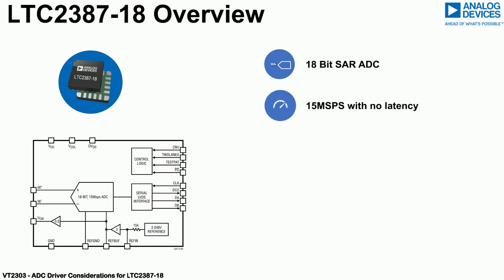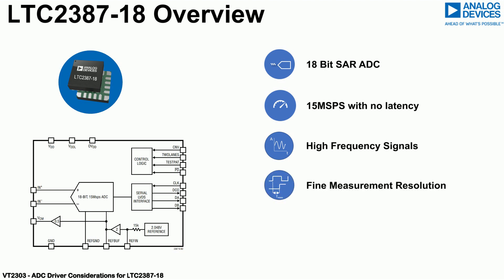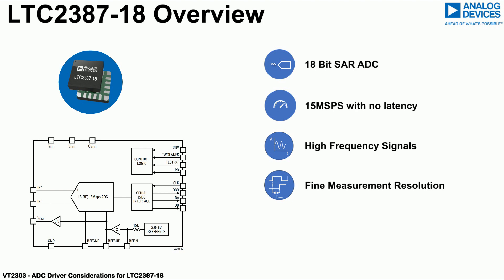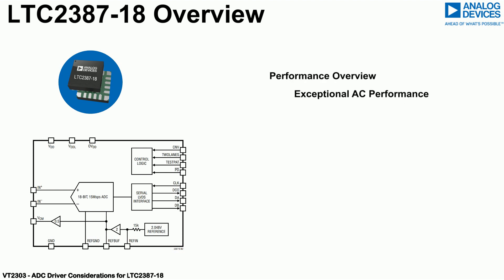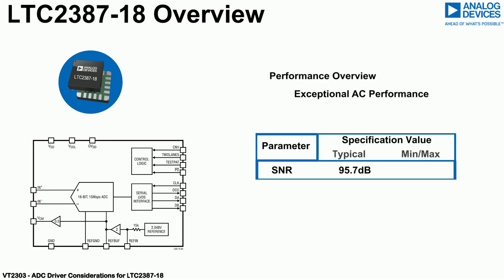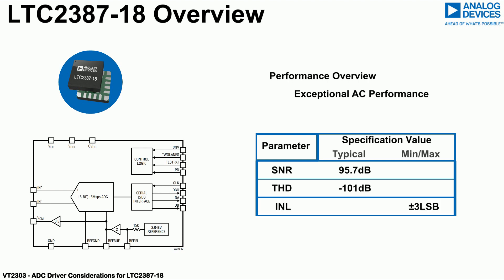A sampling rate of 15 mega-samples per second can provide benefits in closed-loop systems, systems measuring high-frequency signals, or where a fine time resolution is required when profiling signals in the time domain. The LTC 2387-18 has Nyquist sampling up to 7.5 MHz, delivers SNR up to 95.7 dB, total harmonic distortion performance up to minus 101 dB, and specifies 3 LSB maximum INL performance.